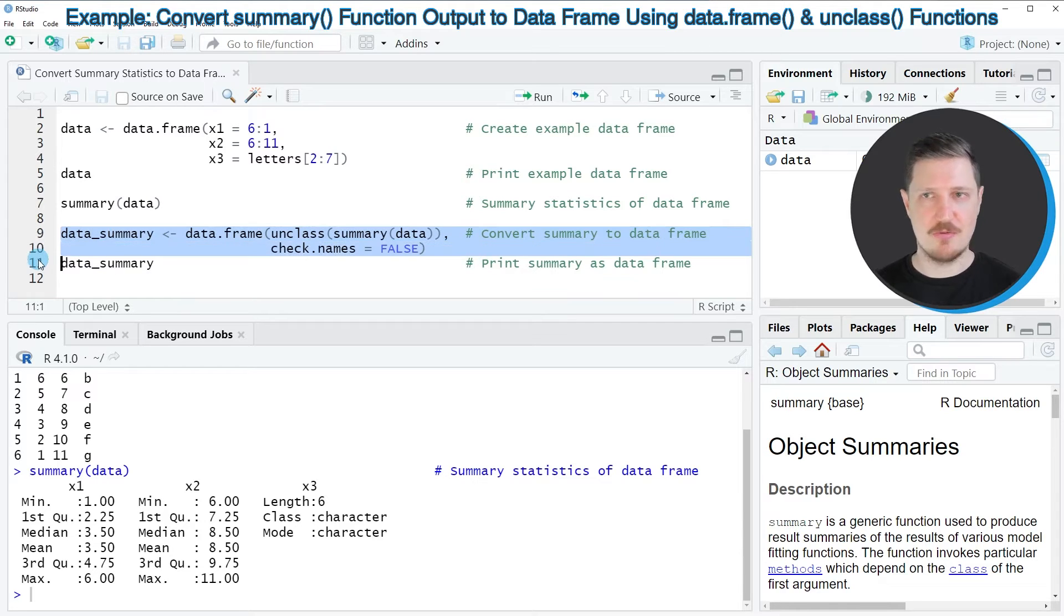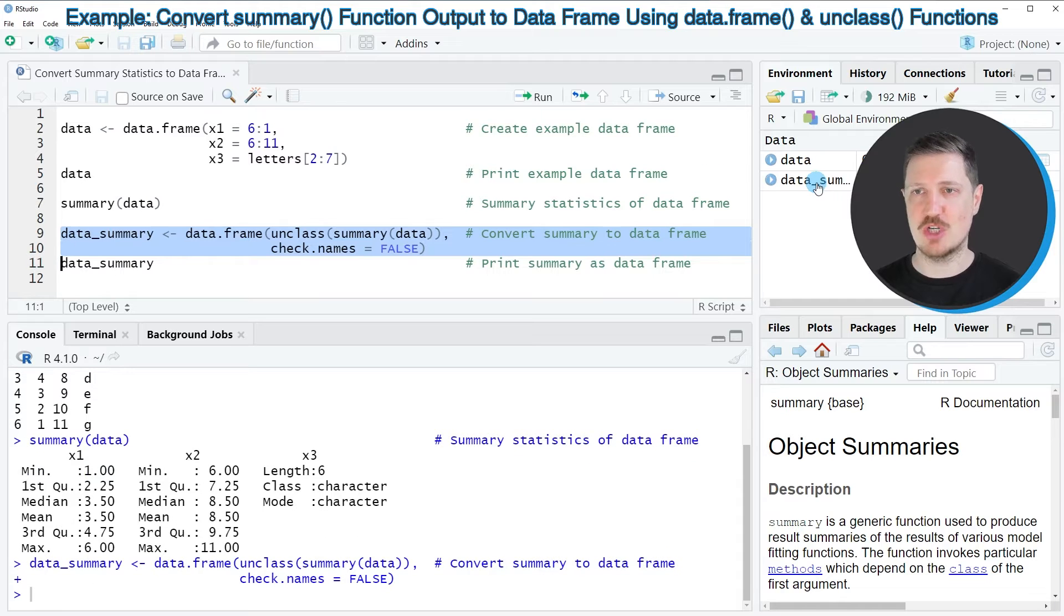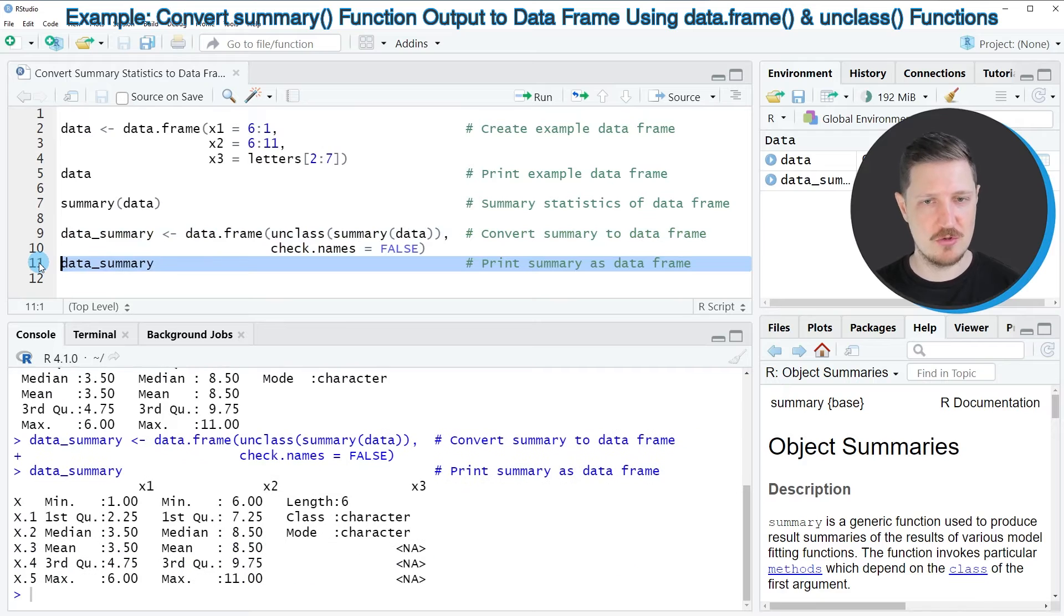After running lines 9 and 10 of the code, a new data frame object is appearing at the top right, which is called data_summary. We can print this new data frame to the bottom in the RStudio console by running line 11 of the code.